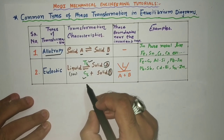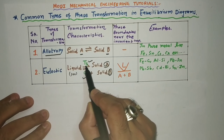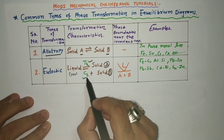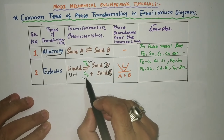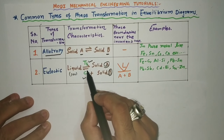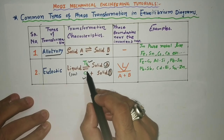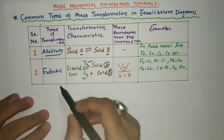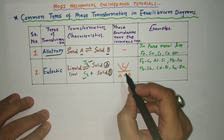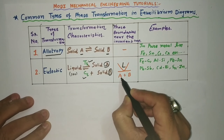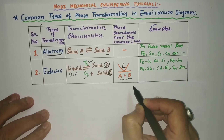In the phase diagram, one horizontal line is drawn from the eutectic temperature and one vertical line from the eutectic composition — their intersection forms the eutectic point. The transformation is made from this point, where the liquid phase transforms into two solids. This is known as eutectic transformation.